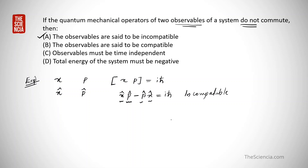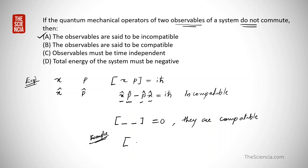If the commutator of two operators equals zero, then those observables are compatible. An example of compatible observables is L-squared and Lz: the commutator [L², Lz] equals zero. In contrast, the commutator [x, px] equals i h-cross, so those are incompatible.